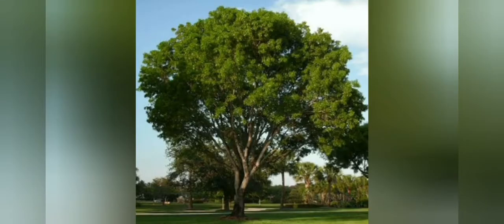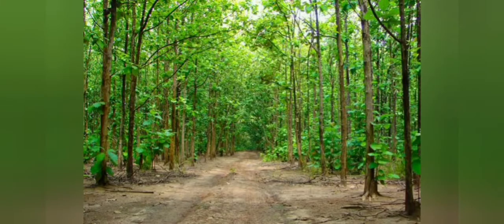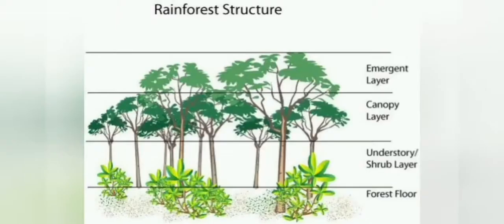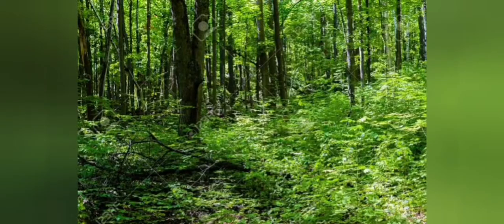Overstory means tall trees which form the upper area. Understory means the branches of the upper area. Giant and tall trees constitute the top layer, that means canopy or overstory. These are followed by shrubs and tall grasses. Then the next layer will be herbs and moss, which form the lower layer.